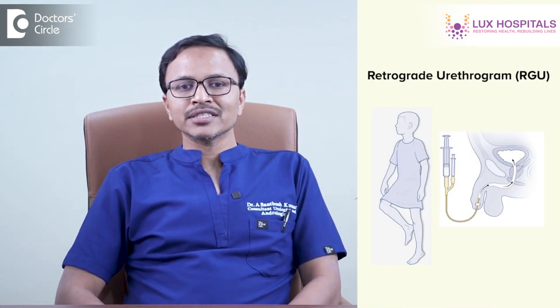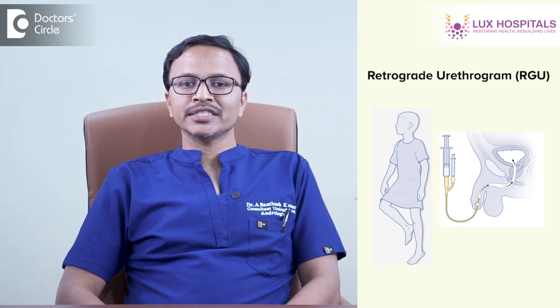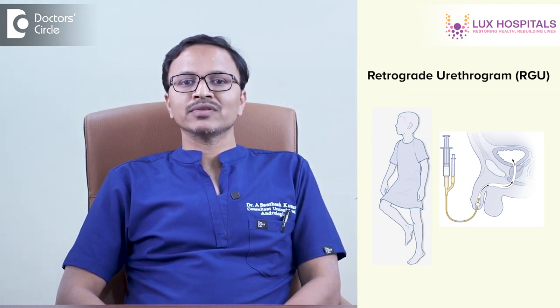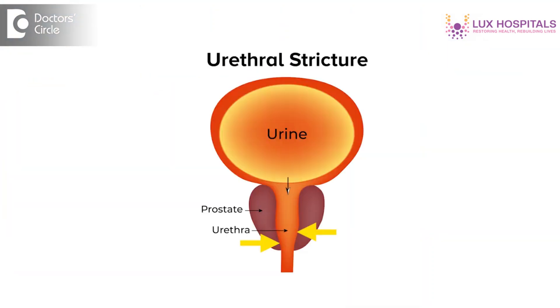If we are suspecting a urethral stricture, uroflowmetry will show a box-like pattern in a stricture case. Whenever there is a box-like pattern on uroflowmetry, we then perform an RGU — that is, retrograde urethrogram — to diagnose the stricture. Based on these investigations, we can determine the location of the stricture, how severe it is, and what the length of the stricture is. These criteria help us in planning the treatment.